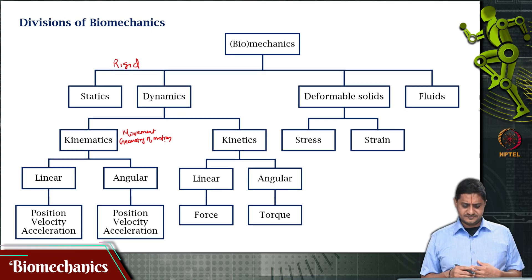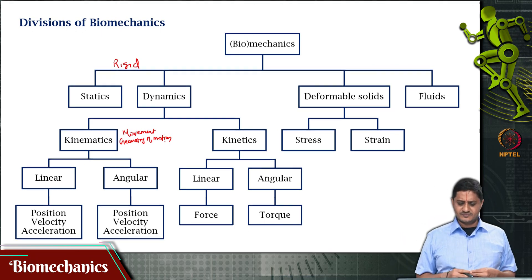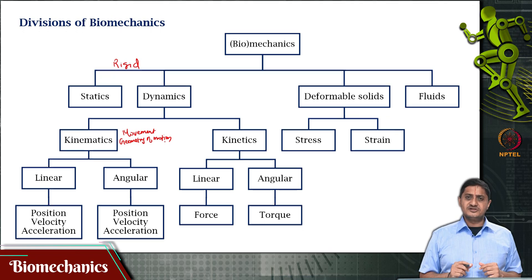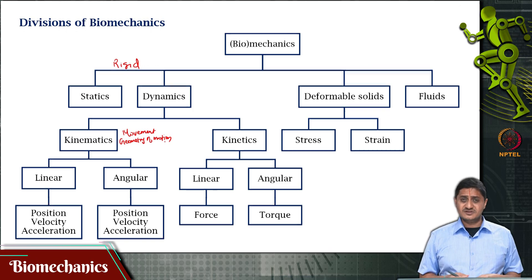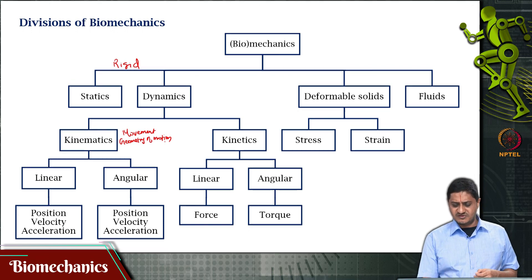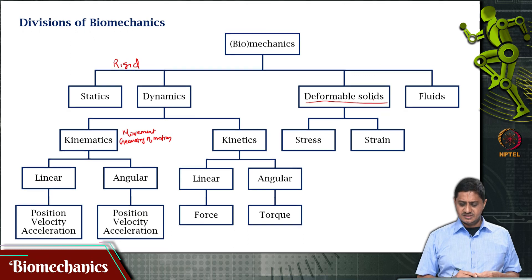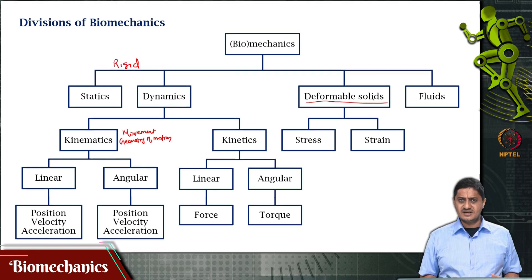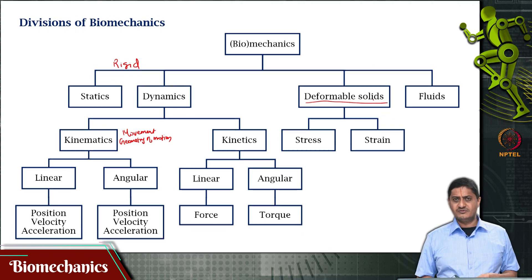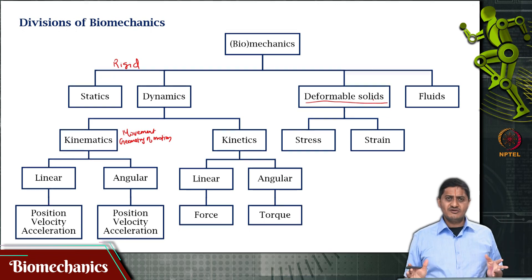Kinetics can also be divided into linear and angular types. For linear, you have force, and for angular, you have torque. So far, this considers a body under study to be a rigid body — one whose size does not change as a function of the applied force. But if there is a deformation when a force is applied, these types of solids are called deformable solids. Within deformable solids, we are interested in stress and strain and the relationships between them. And then you have fluids. This is the broad division of mechanics itself.